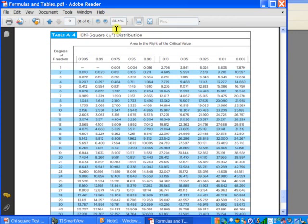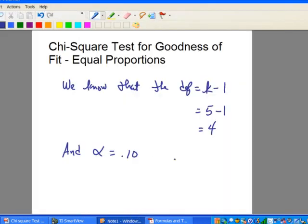That's on our formulas and table sheet. Notice here it's table A4. So what we want to do is to look down the left-hand column till we have four degrees of freedom and then run across till we find a 10% level of significance. And so it appears that our critical value is 7.779. So let's go ahead and record that now. So the critical value is 7.779. We don't have to worry about writing plus or minus like we did in the previous chapter because all of these chi-square tests are right-tailed tests. So all the critical values and all the test statistics are going to be positive numbers.